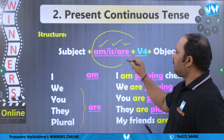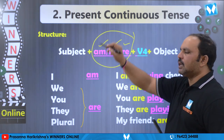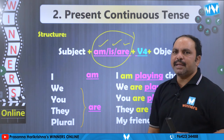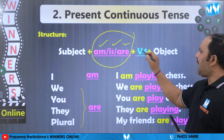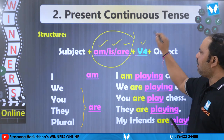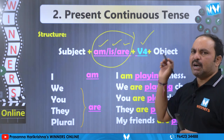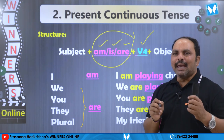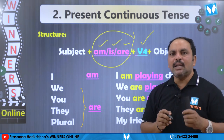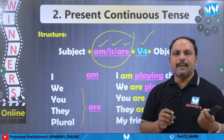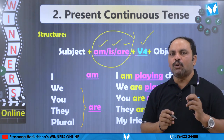This lo helping verb is quality. Am, is, are. Meeru main verb ochese V4 form vastundi. Helping verbs emao am is are, main verb emao V4.